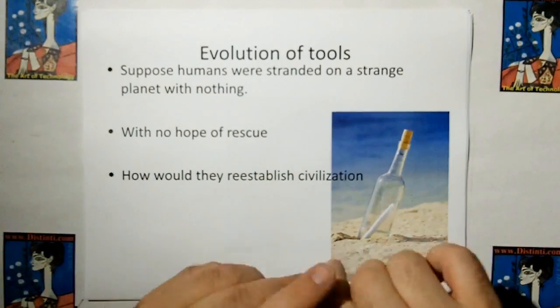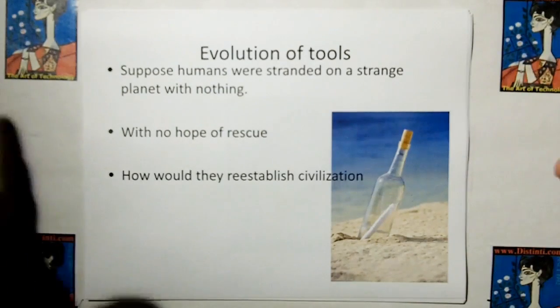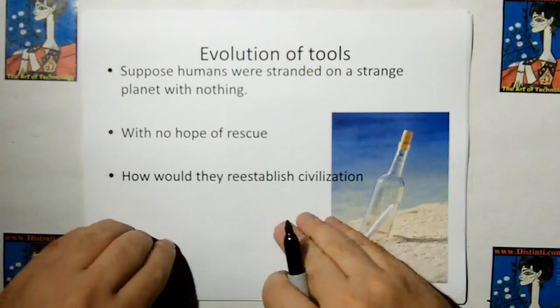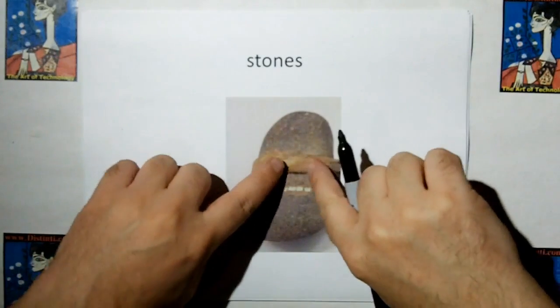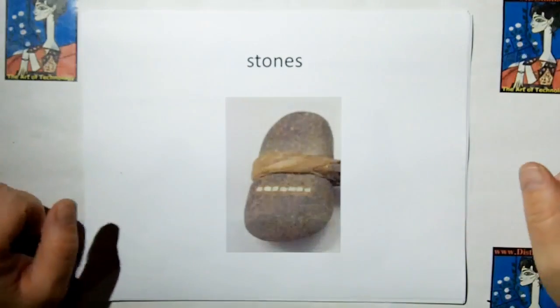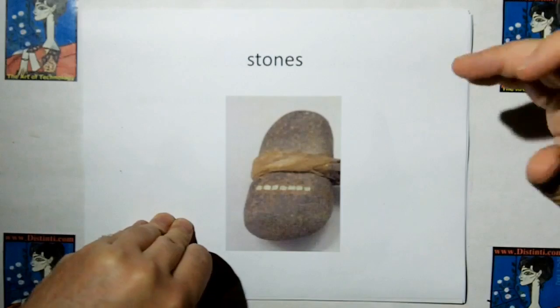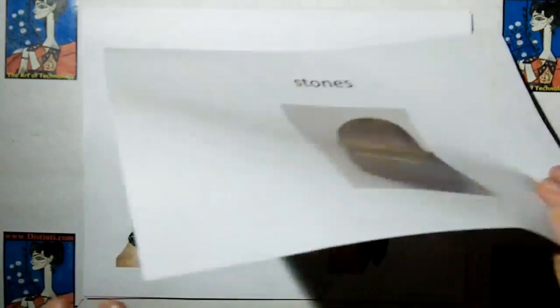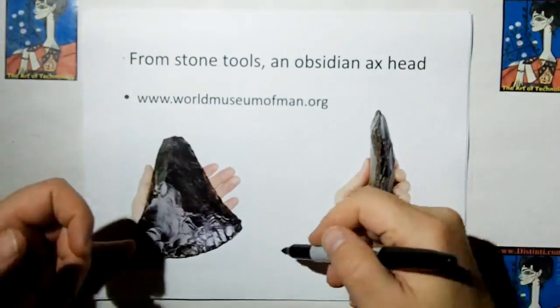There's another way to describe gateway models through the evolution of normal tools that mankind developed. Let me start off this analogy. Suppose humans were stranded on a strange planet with absolutely nothing and no hope of rescue. How would they reestablish civilization? Well, first they're going to find stones. And forget that there's a little handle attached. Just look at the stone itself. They're going to start with a stone and they can't cut wood with it so they can't make a hammer yet. So what they're going to do then is go find themselves a piece of obsidian and with that stone tool cleave off bits of the obsidian to create an axe.